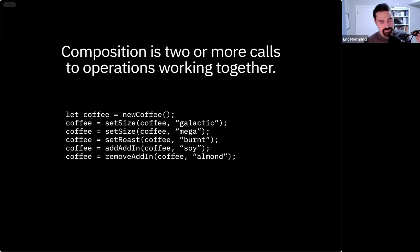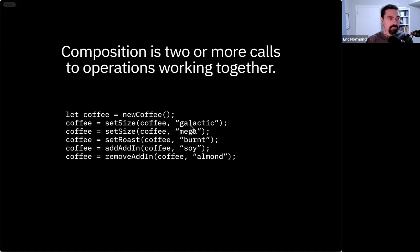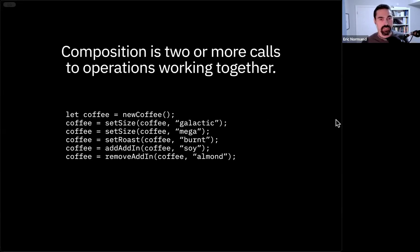So this lens is called composition — it's about how operations work together, and even how an operation could work with itself. Rarely do we see one operation doing all the work — you've got a bunch of methods or functions and you're going to compose a solution with all of them. Here's an example: a scenario where a barista is typing in your order. You set the size to galactic, then change your mind and want mega. Then you set the roast, add an add-in, and then they accidentally press the remove almond button. That's a simple example of composition — things happening in sequence.